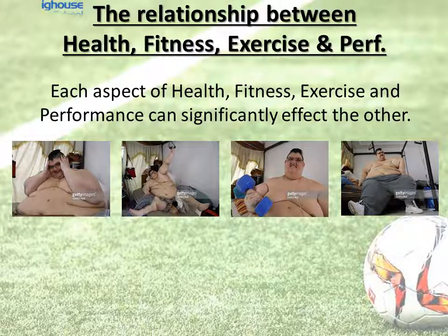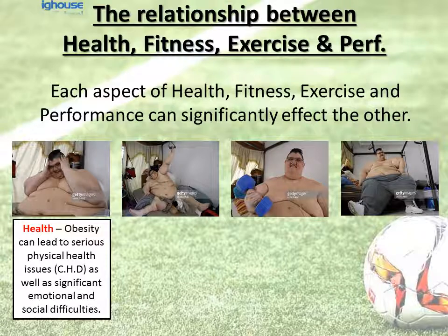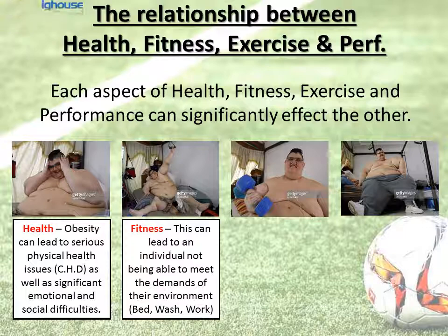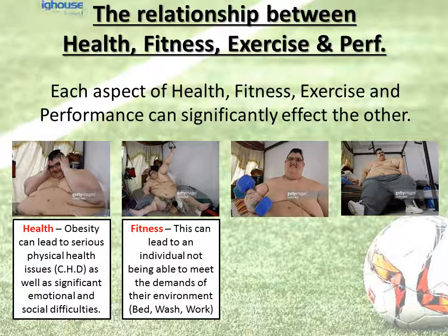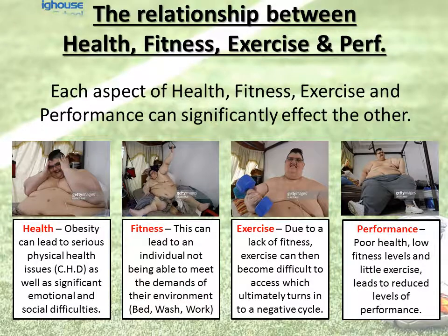However, we're also going to show how each aspect can link negatively. If we look at this individual, there's clearly an issue with obesity. Obesity can lead to serious physical health issues such as chronic heart disease (CHD), as well as significant emotional and social difficulties — not feeling happy about yourself, which can lead to depression, and socially not being able to interact with others or leave the house. As a result, this individual is not able to meet the demands of their environment — they're not able to get out of bed, wash themselves, go to work or attend school. Exercise then becomes really difficult to access, creating a negative cycle: unable to exercise, poor physical health, poor fitness, which has significantly reduced any level of performance.